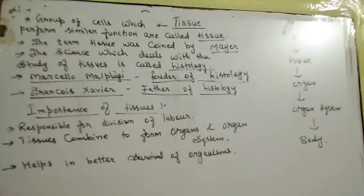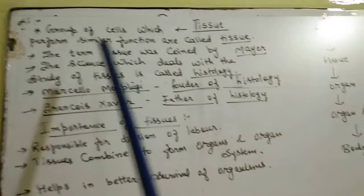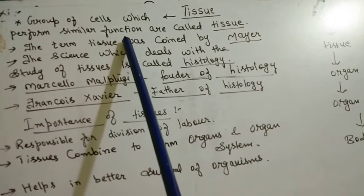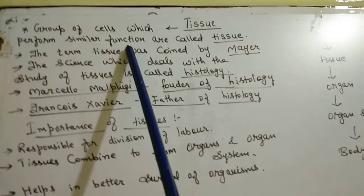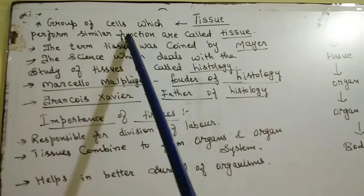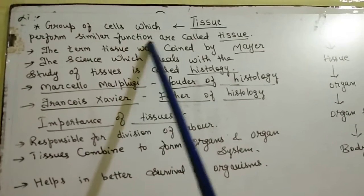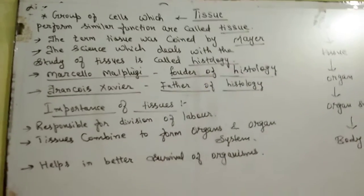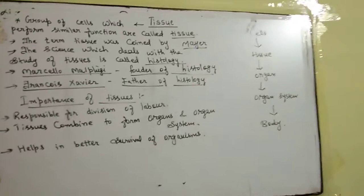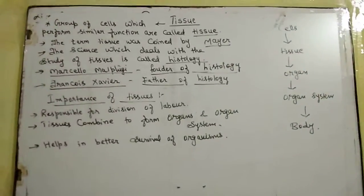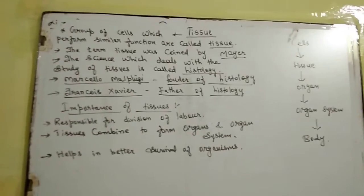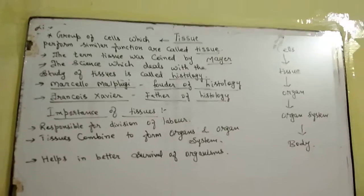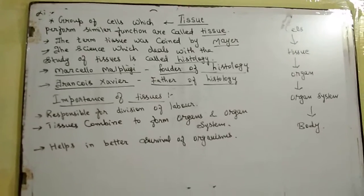Tissue means a group of cells which perform similar functions. A group of cells which perform similar functions are called tissue. This is a very simple definition — a group of cells which perform one function is known as tissue.